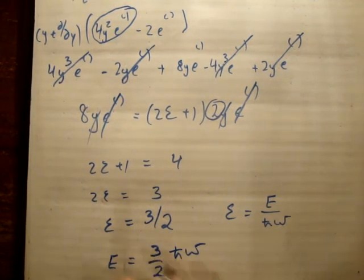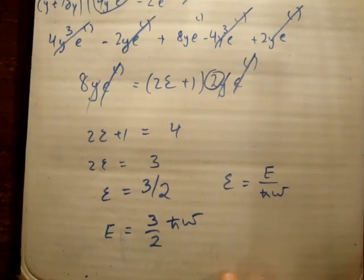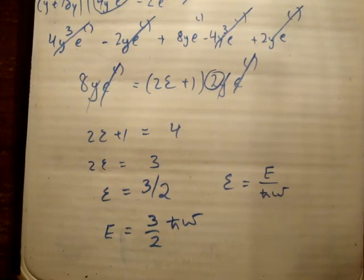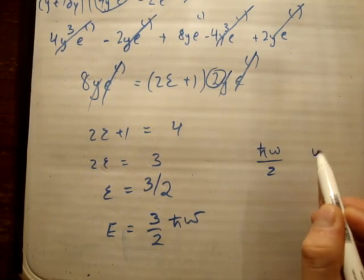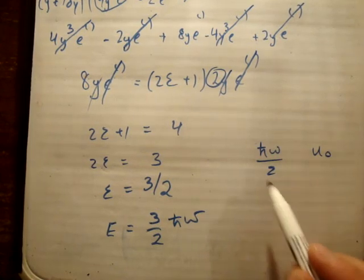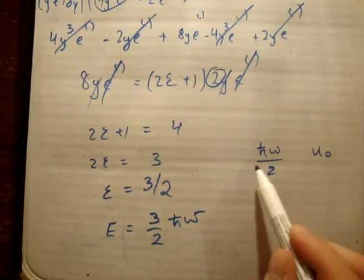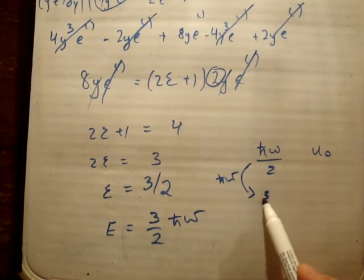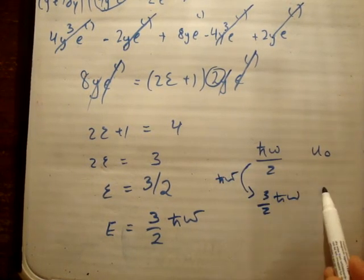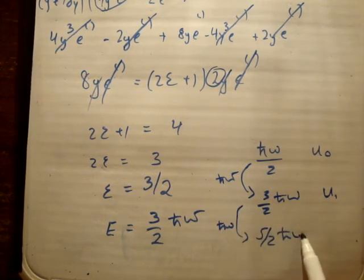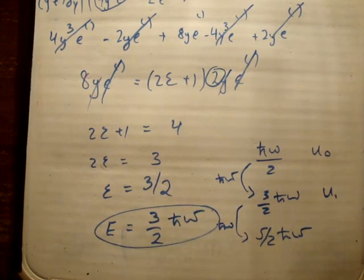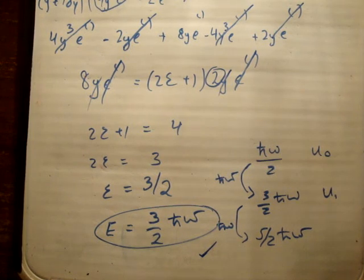Does that make sense? Yes — this is the first excited wave function u1, and we showed the ground state energy was ℏω/2. The energy jumps are in units of ℏω, so u1 should have energy ℏω/2 + ℏω = 3/2 ℏω, and u2 would have 5/2 ℏω. Our result E = 3/2 ℏω is correct. Thanks for watching — please pass it on to your friends and subscribe to my channel.